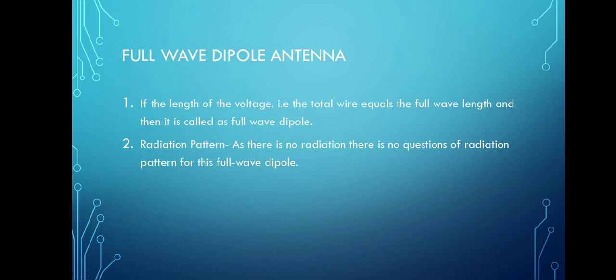The next topic is the full-wave dipole antenna. If the total length of wire equals the full wavelength, it is called a full-wave dipole antenna. The voltage and current distribution shows that both positive and negative peaks of the wave induce positive and negative voltages respectively; however, the induced voltages cancel each other out, so there is no radiation.